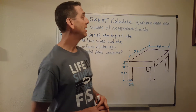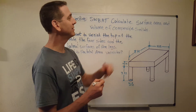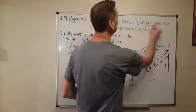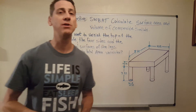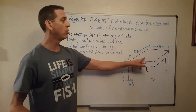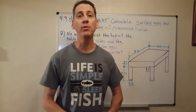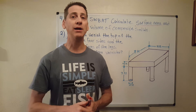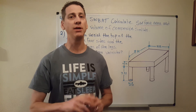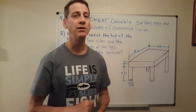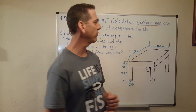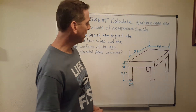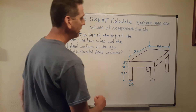Today we're going to be looking at how to calculate the surface area of composite solids. In my previous video we learned how to calculate the volume of a composite solid, so in this video we're going to really focus on surface area. We have a little work table here, and by the way the notes and formula sheet are in the description below — just click on that and print those out.